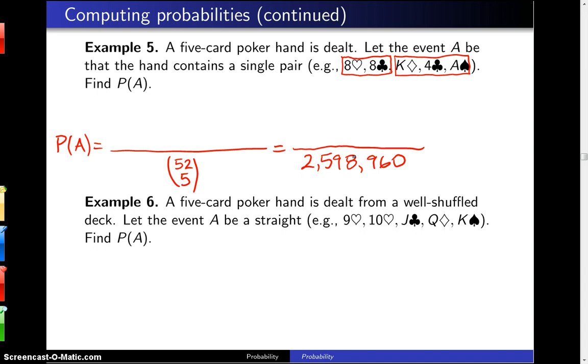So of those two and a half million poker hands, we want to figure out how many of them contain a single pair. So up top, we are going to start with 13 choose 1.